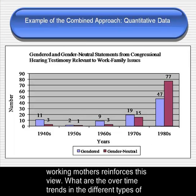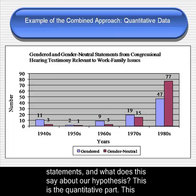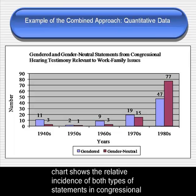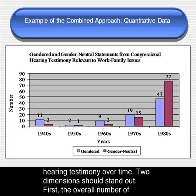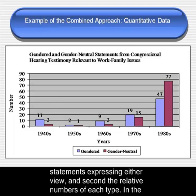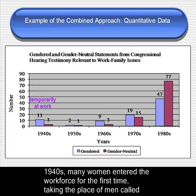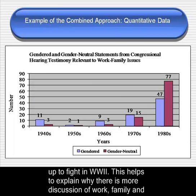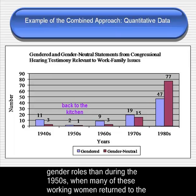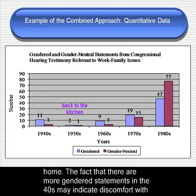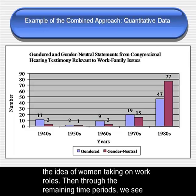What are the over-time trends in the different types of statements, and what does this say about our hypothesis? This is the quantitative part. This chart shows the relative incidence of both types of statements in Congressional hearing testimony over time. Two dimensions should stand out: first, the overall number of statements expressing either view, and second, the relative numbers of each type. In the 1940s, many women entered the workforce for the first time, taking the place of men called up to fight in World War II. This helps to explain why there is more discussion of work, family, and gender roles than during the 1950s, when many of these working women returned to the home. The fact that there are more gendered statements in the 1940s may indicate discomfort with the idea of women taking on work roles.